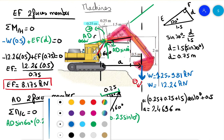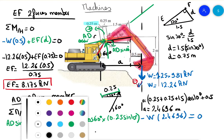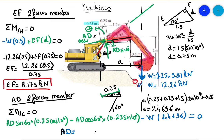Setting the moment about C equal to zero: AD times [0.5·sin(60°)·cos(10°) minus 0.25·cos(60°)·sin(10°)] minus W times a equals zero. Solving for AD gives AD equals W times 2.41696 divided by [0.25 times (sin(60°)·cos(10°) minus cos(60°)·sin(10°))], multiplying W as 1.25 times 9.81. This gives AD equal to 158.1 kilonewtons.